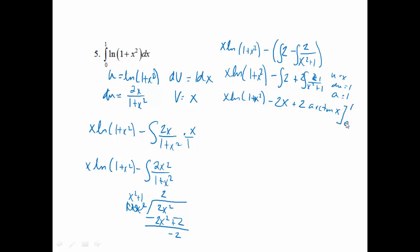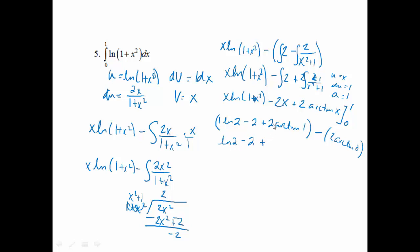Now I evaluate from 0 to 1. Plugging in 1: 1·ln(1 + 1) − 2 + 2·arctan(1) = ln(2) − 2 + 2·(π/4). Plugging in 0: 0·ln(1) − 0 + 2·arctan(0) = 0. Simplifying: ln(2) − 2 + 2·(π/4) reduces to ln(2) − 2 + π/2. That is the answer for that problem.